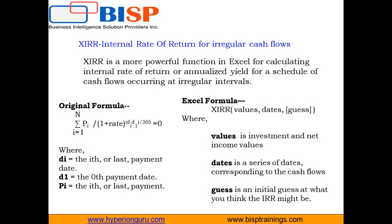Problems can occur if dates are not entered in the right format — XIRR will return a #VALUE! error. The third argument is the optional guess value, which defaults to 10% if omitted.